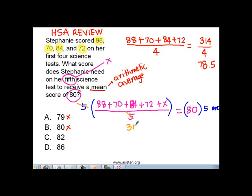We already computed that the sum of these four numbers is 314, so 314 plus the x. That's our simplified form of our numerator. The denominator is already cancelled out. Equals 80 times 5 is 400.